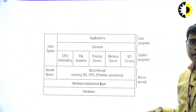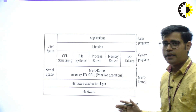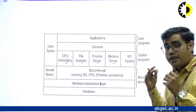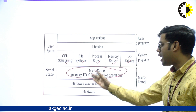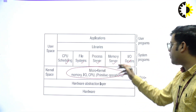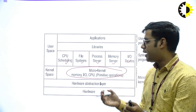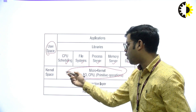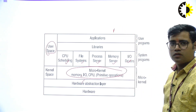Next is the microkernel. In microkernel, we separate all the functionality into different modules like CPU scheduling, file system, process server, memory server, and I/O devices. But only the necessary functionality is kept in the kernel space — necessary things like CPU, I/O, and memory. Different functionality like CPU scheduling, file system, process server, memory server, and I/O devices are divided into different modules and provided in the user space. Only essential things are kept in kernel space — applications interact with hardware through this minimal kernel.